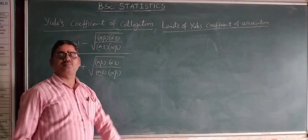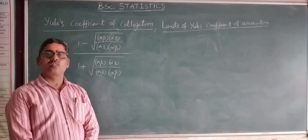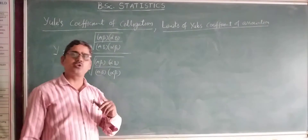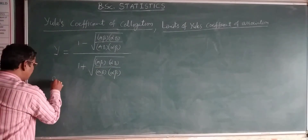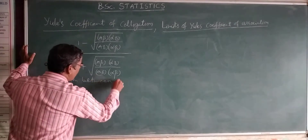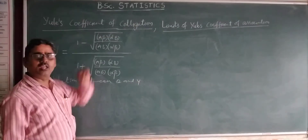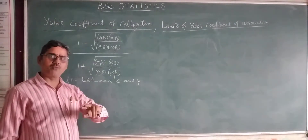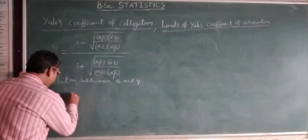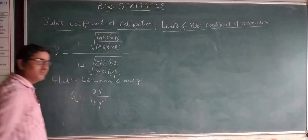To find the limits of Yule's coefficient of colligation, I consider the relation between Q and Y, where Q is Yule's coefficient of association and Y is Yule's coefficient of colligation. The relation between Q and Y is: Q equals 2Y divided by 1 plus Y squared.